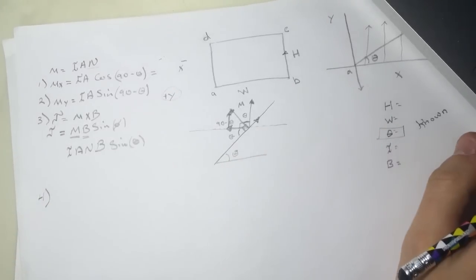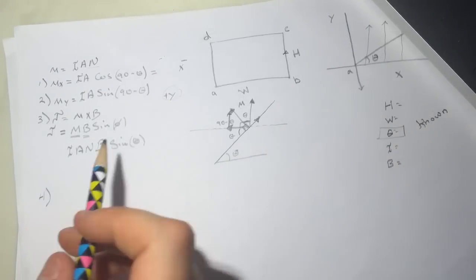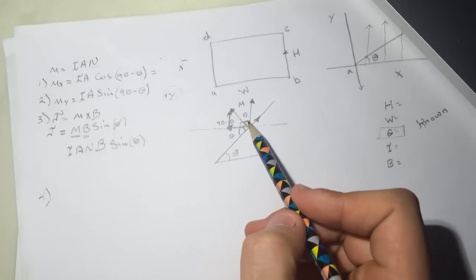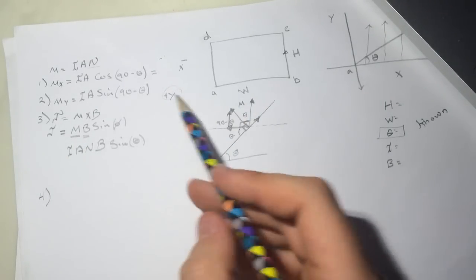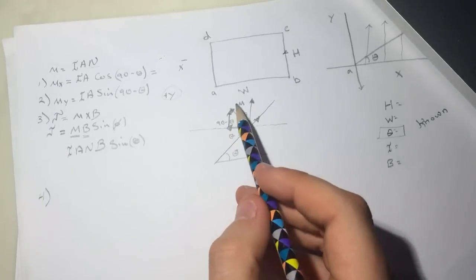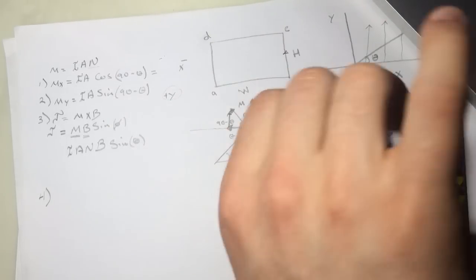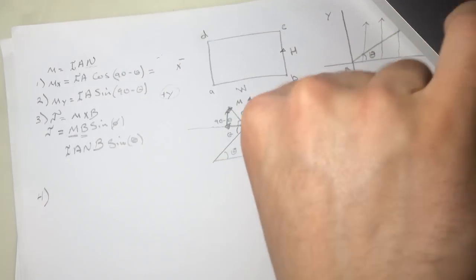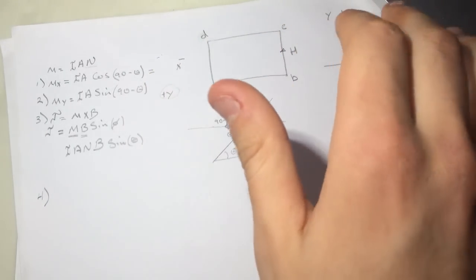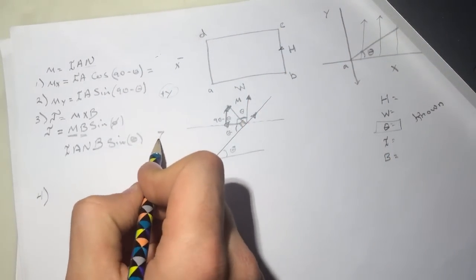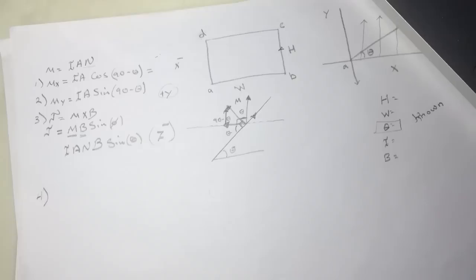Now for the direction of the torque: using the right-hand rule for u cross B — pointing fingers along u and curling toward B — the thumb points into the page. So the torque is in the negative z-direction.